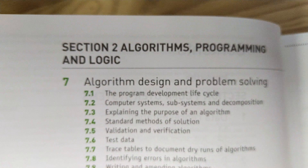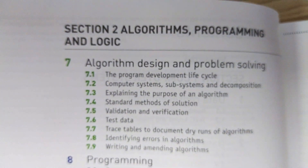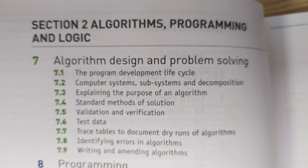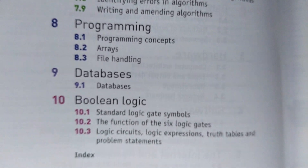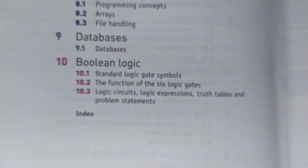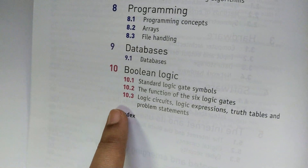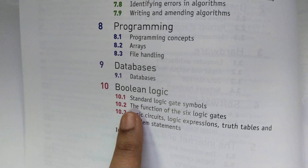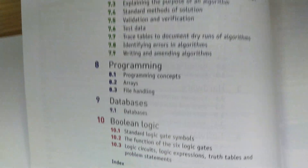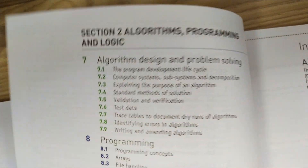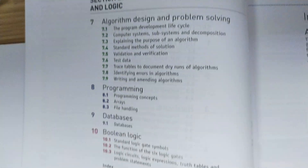Section number two has been renamed to Algorithms, Programming and Logic. Here you will see four topics, and the last one is Boolean Logic, which has been added to this section instead of being in section one.